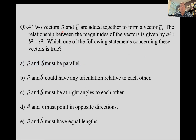Again, we're adding vector A and B together to form vector C. This time the relationship between the magnitudes is A squared plus B squared equals C squared — the Pythagorean theorem. Which statement concerning these vectors is true? Think about it, talk about it with your physics friends, and when you're ready, unpause the video.